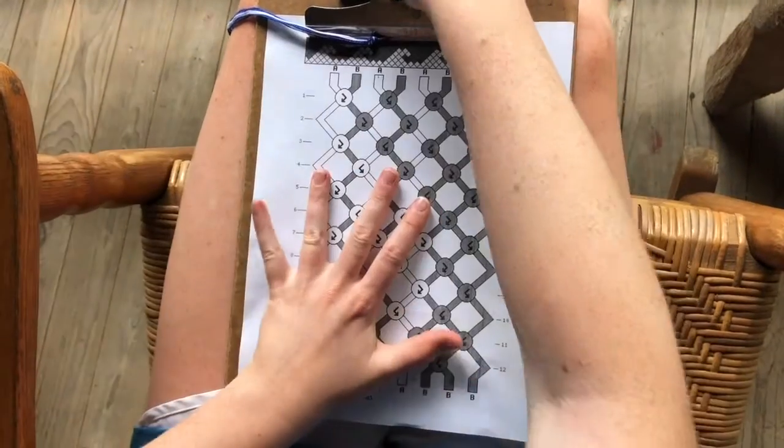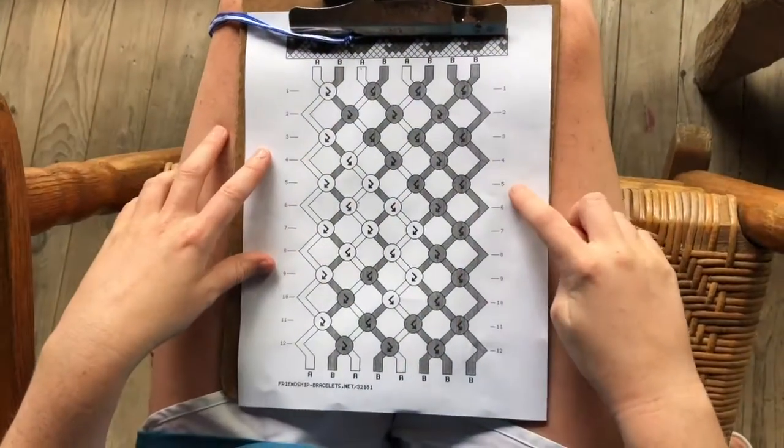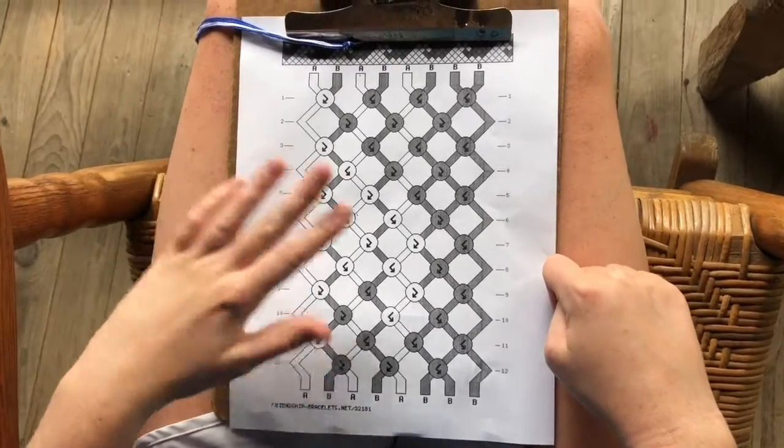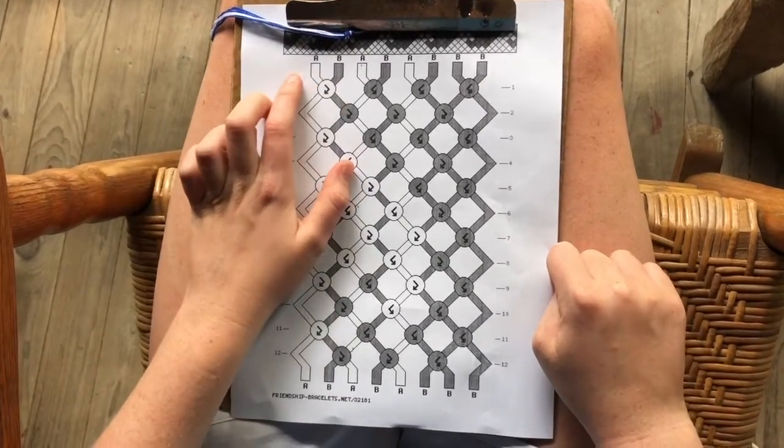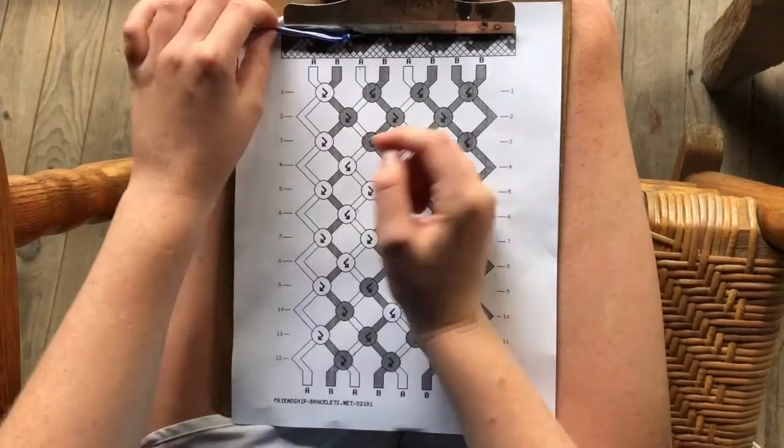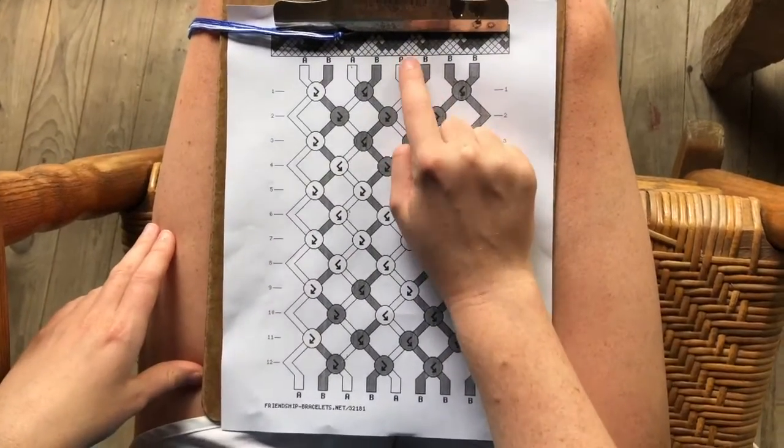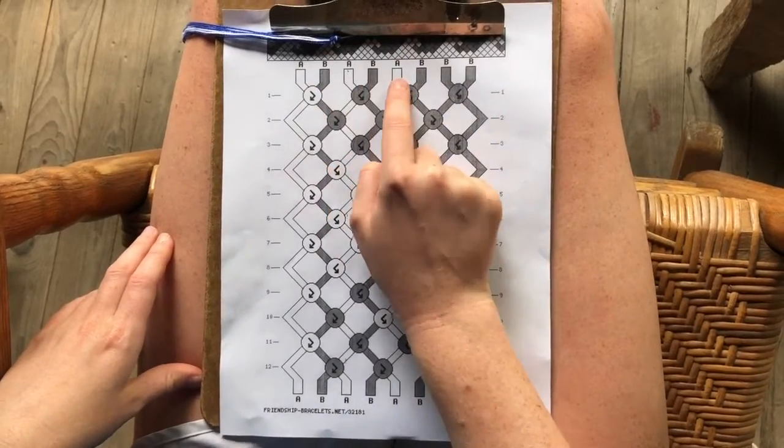And the first thing you need to do after you cut your string is tie a knot at the top and get a clipboard to attach it to. So we printed this pattern off from online and we'll link the pattern down below or put this picture up somewhere, but you can see. So we did blue for our B color which is the darker one, and white for A color. So there's three white strings and five blue strings.